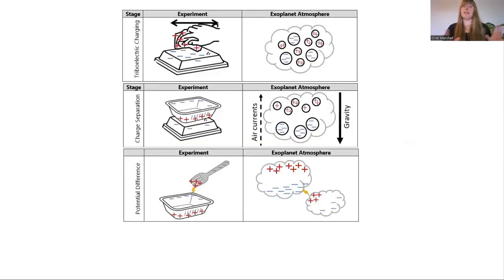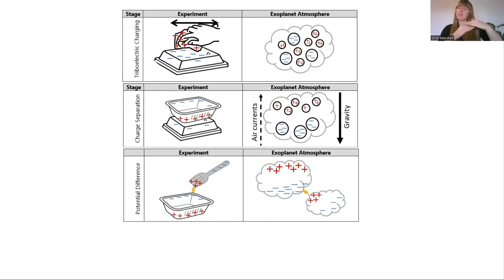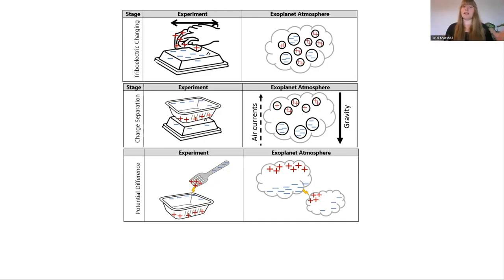The lightning experiment is a little harder to map exactly to what's going on within exoplanets, because instead of a step-by-step process like the clouds, it's more process-by-process. First is triboelectric charging — looking at dynamics within clouds and particles rubbing together. The second step is charge separation, where gravity and air currents separate the two types of charged particles. The last step involves charge moving within conductive materials, building up a large potential difference until you get an electrical discharge.